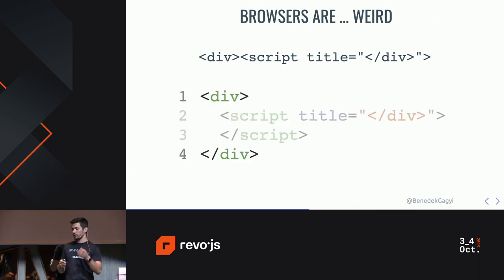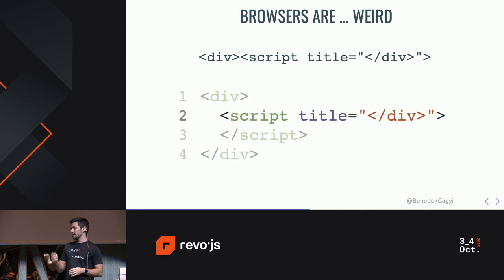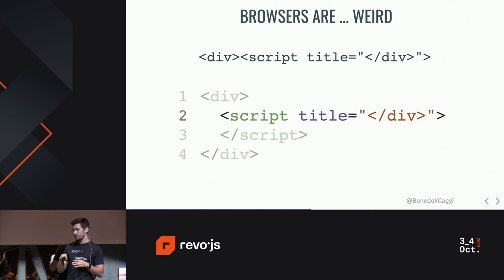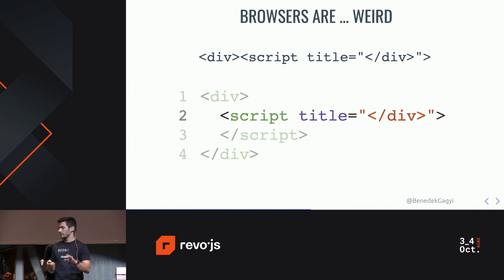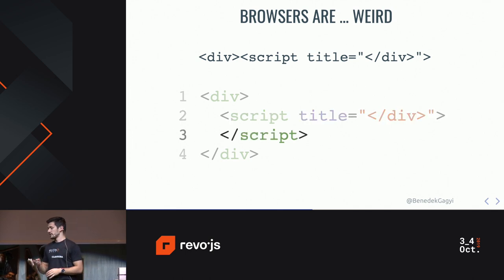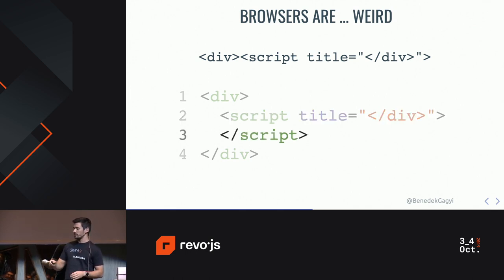Well, the browser will try to figure out what you wanted, and it will render first a div tag, and inside that a script tag with a title that has a closing div string in it. And because you omitted the closing tags, it'll add the closing script tag and the closing div tag too.